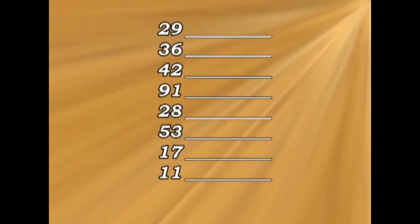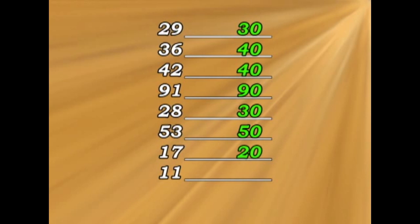So if we want to round off these numbers to the nearest ten, what do we get? Twenty-nine becomes thirty, thirty-six becomes forty, forty-two becomes forty, ninety-one becomes ninety, twenty-eight becomes thirty, fifty-three becomes fifty, seventeen becomes twenty, eleven becomes ten.